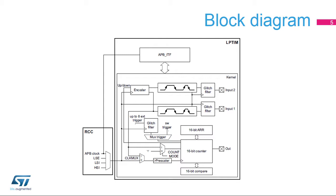The low-power timer features an encoder mode function that can be used to interface with incremental quadrature encoder sensors using the peripheral's input-1 and input-2 inputs. Both inputs feature glitch-filtering circuitry.